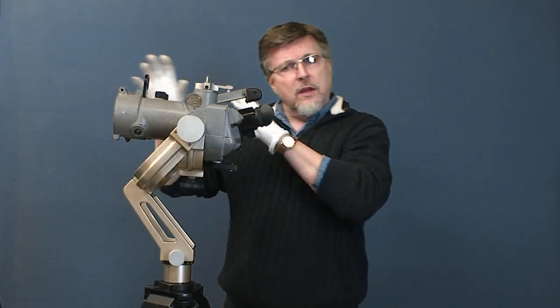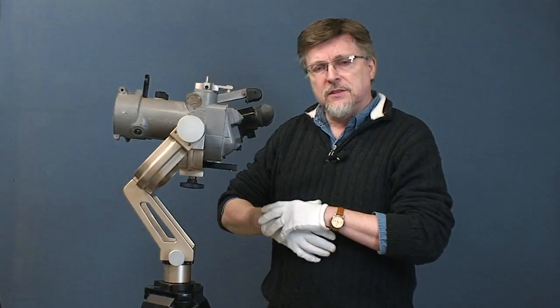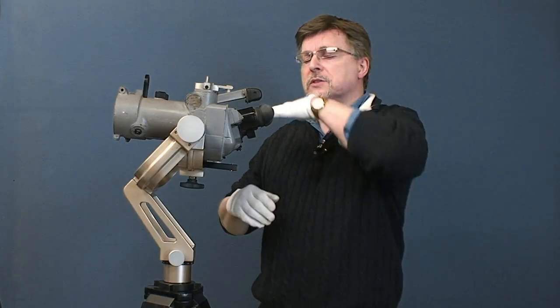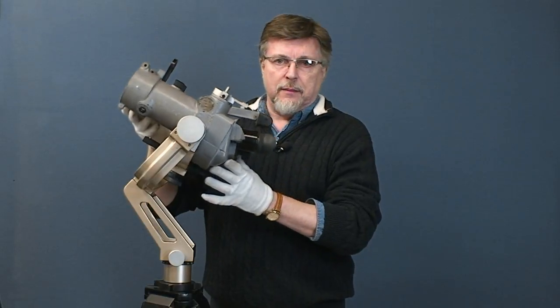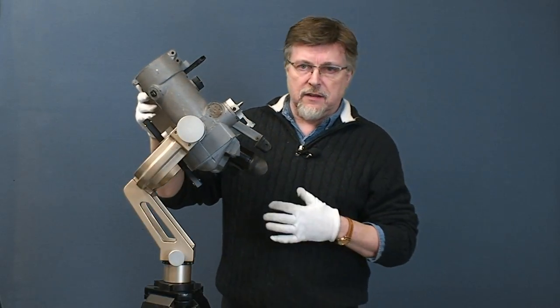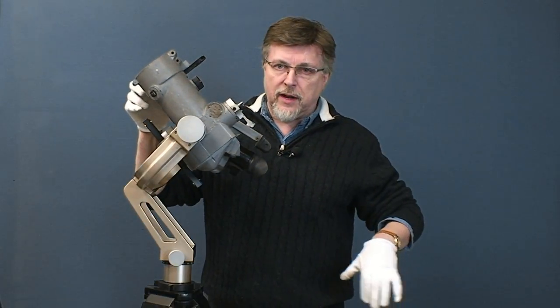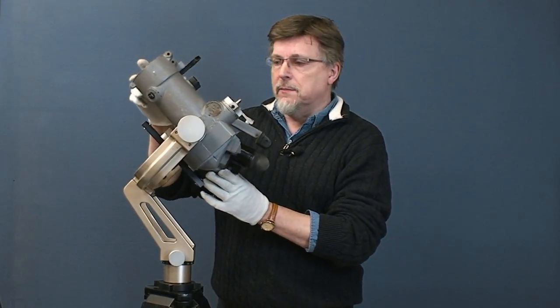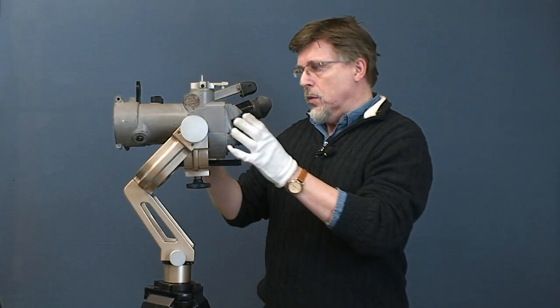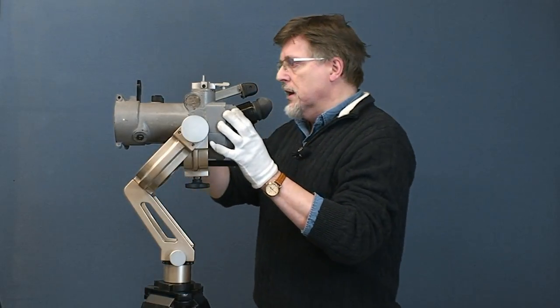This binocular has 20-degree cranked eyepieces. The one we were looking at previously, the flat glass, was 45-degree. This one is 20-degree. Now clearly if the binocular is tilted up too far, these eyepieces are going to find themselves pointing at the ground. In fact, the limit is around about maybe 40 to 45 degrees.